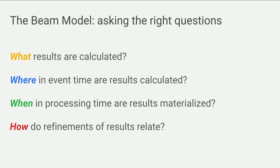When building an API, you are really answering the questions the API is asking you. In Beam, we focus on answering four different questions. The hypothesis is: if you answer these four questions — what is being computed, where in event time results are calculated, when in processing time results are materialized, and how refinements of results relate — you enable the engine to run computation logic on a cluster of machines, process huge amounts of data, regardless of the source or whether it's batch or streaming.